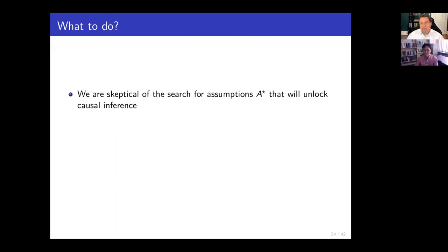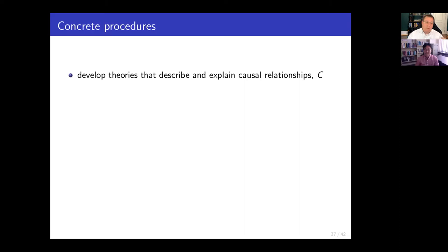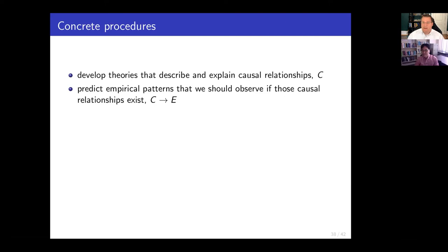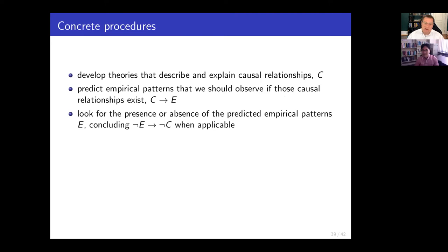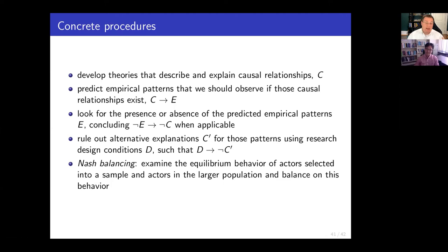To wrap up: we're skeptical of the sorts of assumptions that will unlock causal inference, and instead we think we should just treat causal relationships as theory — there's no causation without explanation. Causal relationships are objects of theory whose truth status is unknown. Instead, what we should do is predict empirical patterns that we observe if we believe certain causal relationships are true, look for the presence or absence of those empirical patterns, and then use research design to rule out alternative causal explanations or rival causes. We also introduce the concept of Nash balancing, which examines the equilibrium behavior of sample versus population, because we need to have a match in order for generalization to happen. I'm interested to hear your feedback and thanks for being attentive.